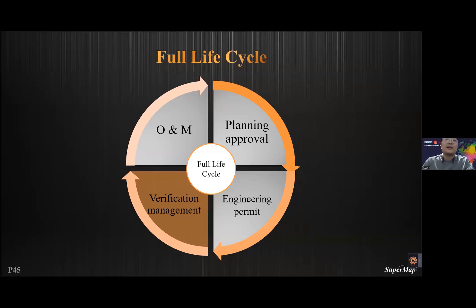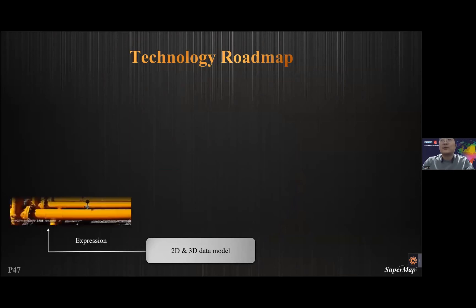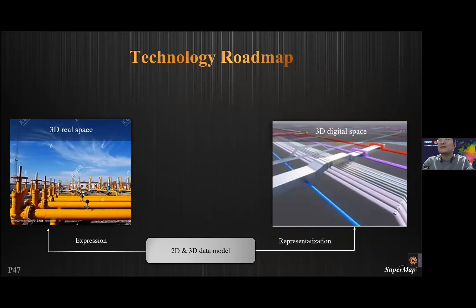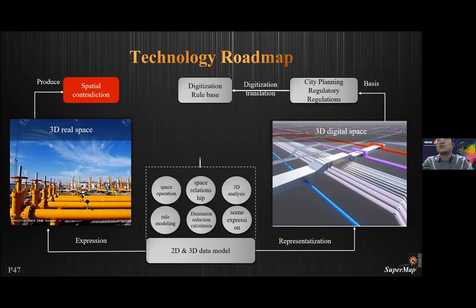The next stage is verification management. The technology roadmap is as follows: the 2D and 3D data model is an expression of 3D real space and representation of 3D digital space. The 3D real space has spatial contradictions. However, based on 3D digital space combined with city planning regulations, we can generate a digitization rule base. Analysis functions can build models based on this rule base, and the digitization rule base can then resolve the spatial contradictions.